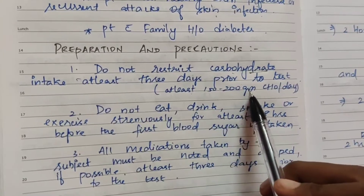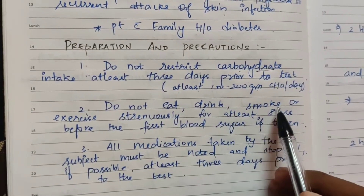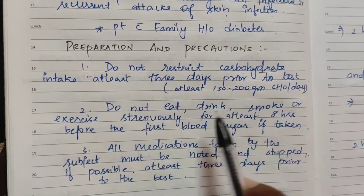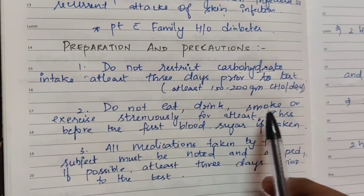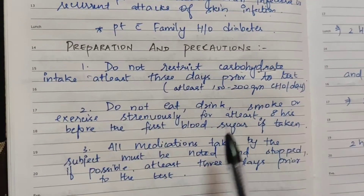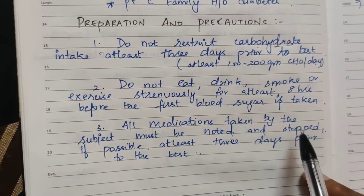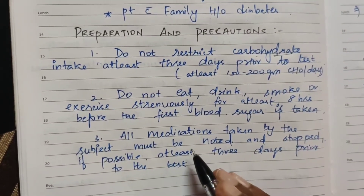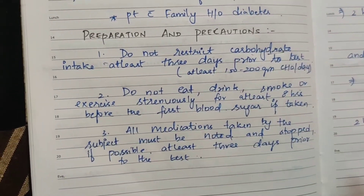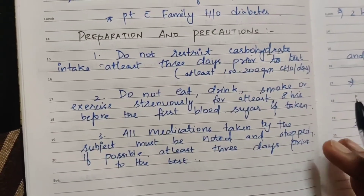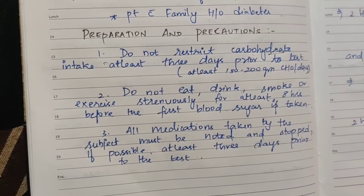Take care of medication — consume at least 150 to 200 grams of carbohydrate per day. Avoid alcohol and strenuous exercise. Medications should be stopped at least 3 days prior to the test, unless necessary and prescribed by a doctor.